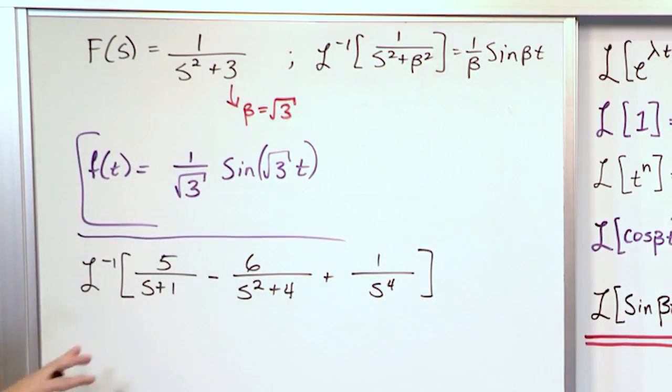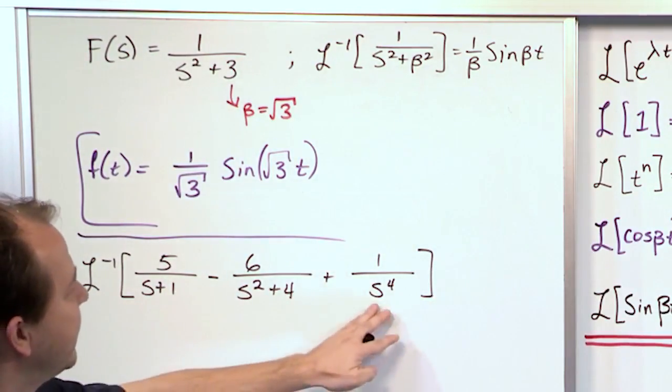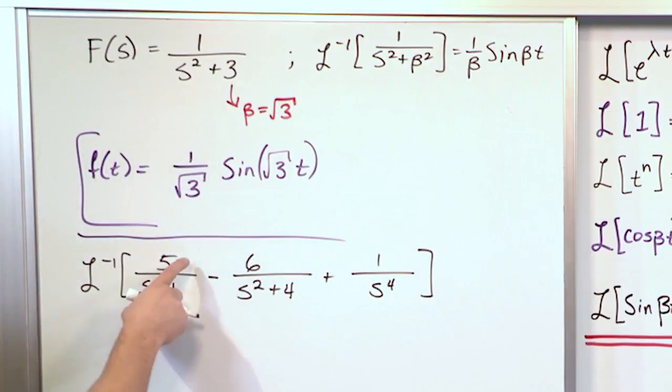They're linked by pluses and minuses. And we already know from before that we can apply the inverse transform to each term separately. So don't worry too much that it's a long string of terms. We can apply it to each thing separately.